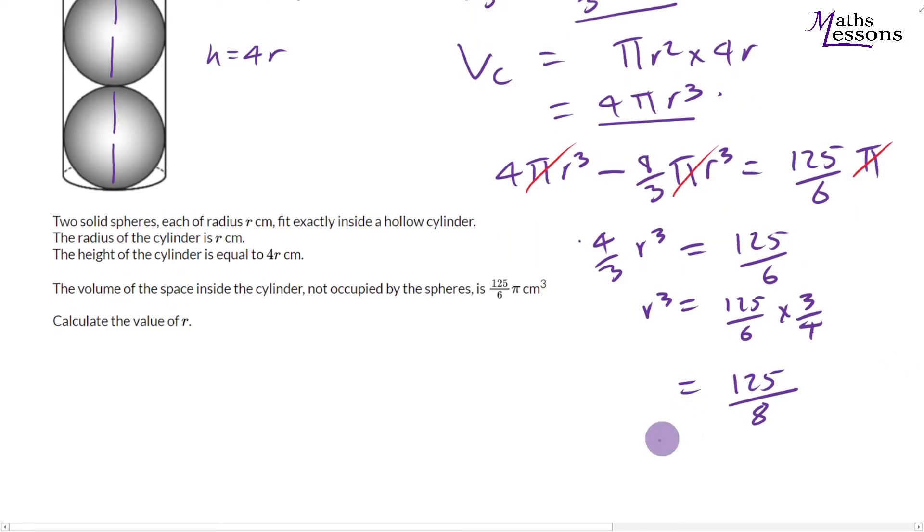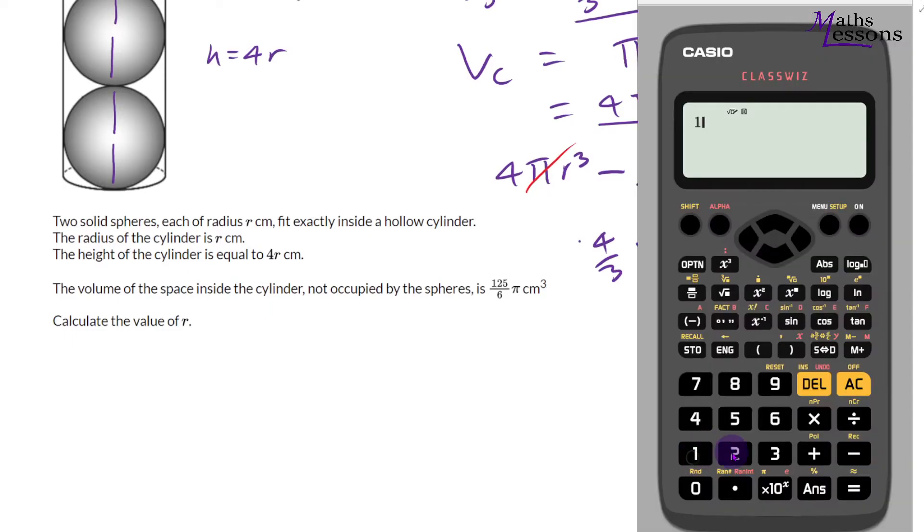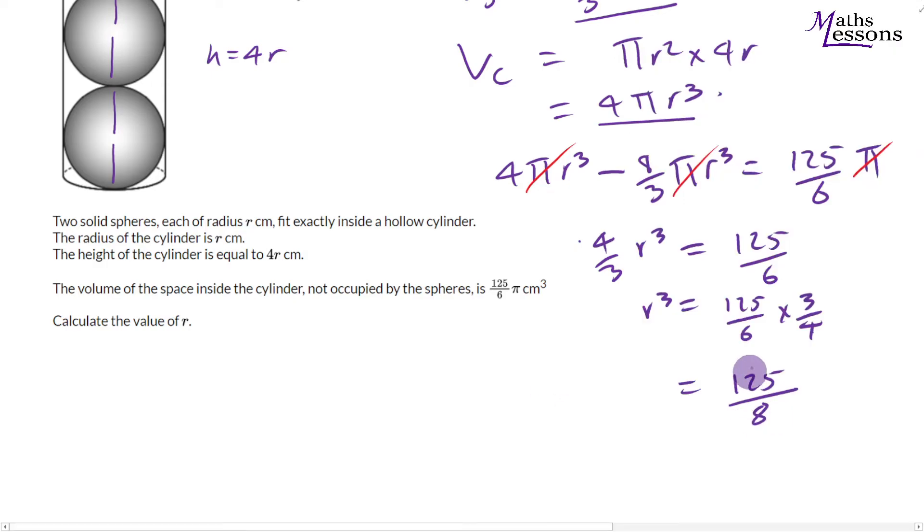It doesn't really matter. You could use the cube root button on your calculator. So if you get your calculator and you write 125 over 8, put that in equals and we want to do cube root. So I think you do shift that and then we do answer. You'll get 5 over 2. Okay. So cube root of 125 is 5. Cube root of 8 is 2. So r will equal 5/2 or 2.5.